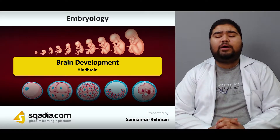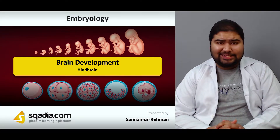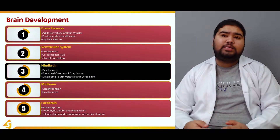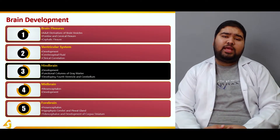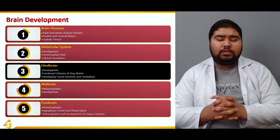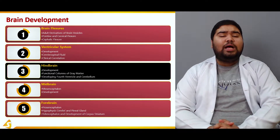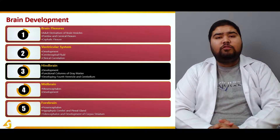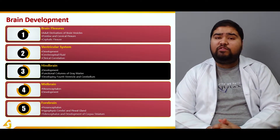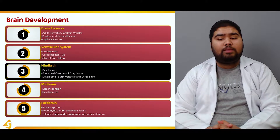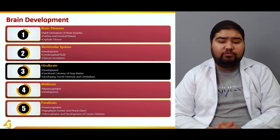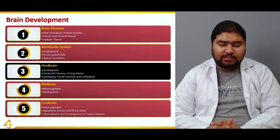We're talking about the development of the brain, and in this section we'll deal with the hindbrain. The hindbrain is the caudalmost part of the brain that is in contact with the spinal cord. We'll talk about how the rhombencephalon forms the adult hindbrain, the development of the functional columns of gray matter, and finally the development of the fourth ventricle and the cerebellum.